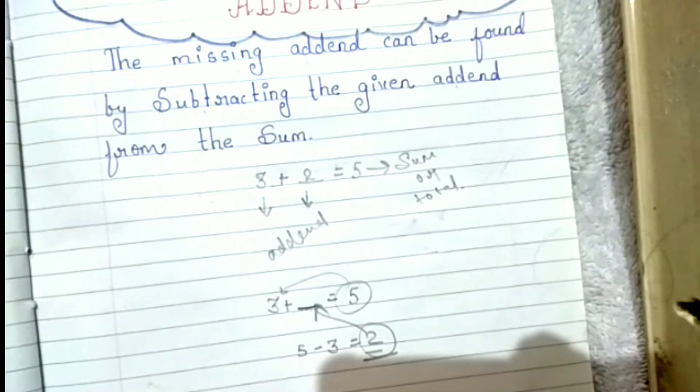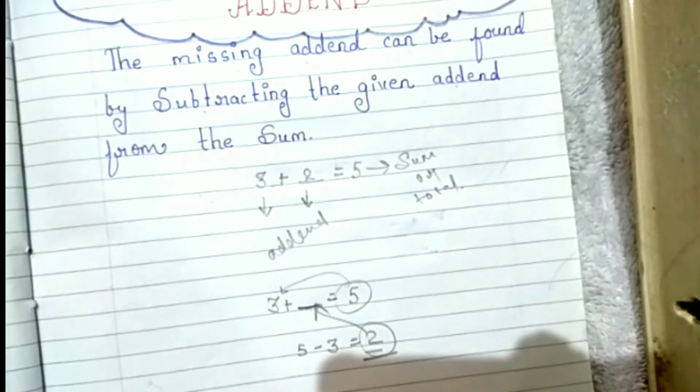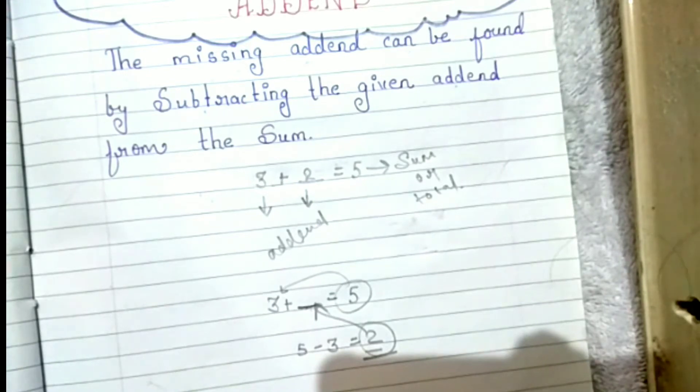That means कि missing addend को find करने के लिए, उसका जो result होता है, जो sum होता है, उसमें से जो addend आपको दिया हुआ है, उसको minus किया जाता है।